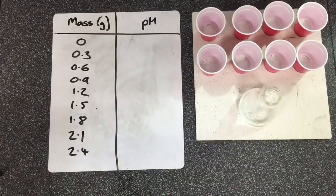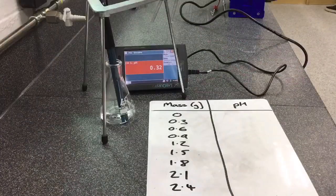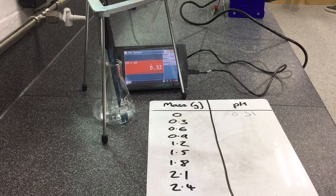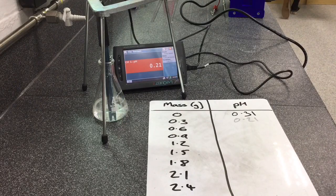We also need to measure out 50 centimeters cubed of hydrochloric acid. At this point we will use a pH probe and a data logger to record the pH of the acid solution.